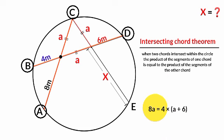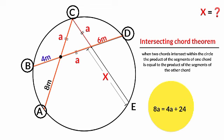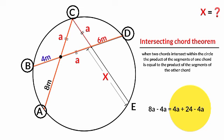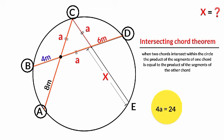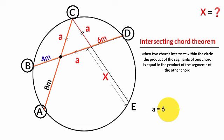Expanding: 8a = 4a + 24. Subtracting 4a from both sides: 4a = 24. Dividing both sides by four: a = 6. So the length of each of these three equal sides is six meters.